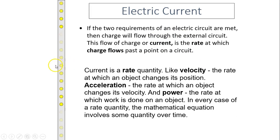going like in one second, pass through that point. So current is a rate quantity, like velocity—the rate at which an object changes position—acceleration is the rate at which an object changes velocity, or power—the rate at which work is done on an object. So current is another rate quantity: how much charge, how many charges, going through one point at one time.